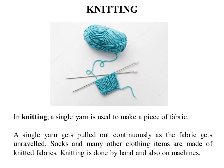In knitting, a single yarn is used to make a piece of fabric. This is the main difference between knitting and weaving — in knitting a single yarn is used, but in weaving two yarns are used and they are interconnected with each other.